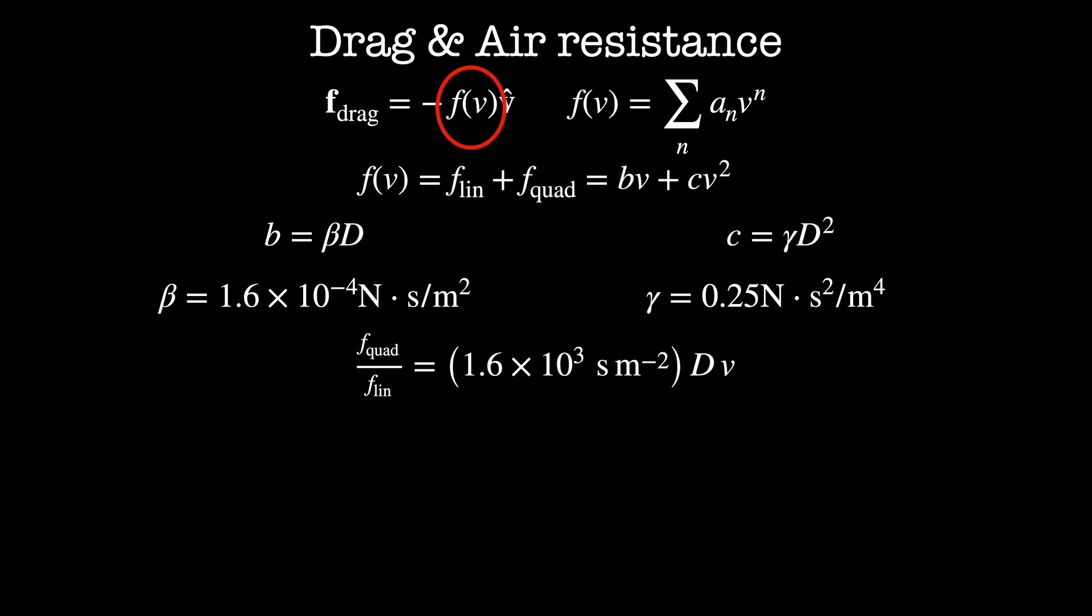Here are a couple of cases to consider. First, we have a baseball that's seven centimeters in diameter traveling at velocity five meters per second. This has a ratio of quadratic to linear drag of about 600. So that's pretty strongly in the quadratic regime.